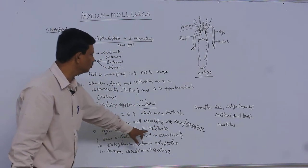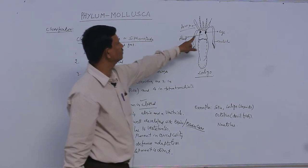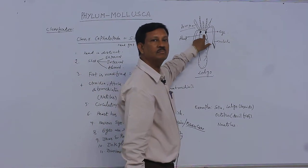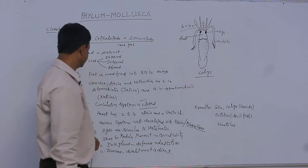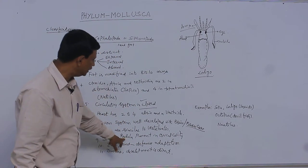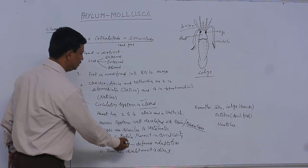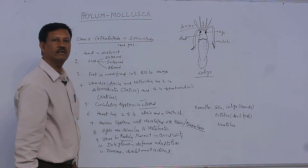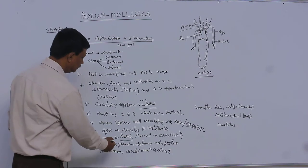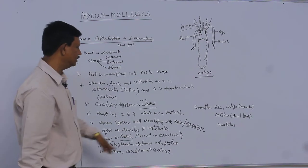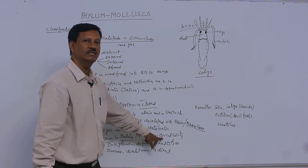Eyes are similar to vertebrates. Large eyes are present, such types of eyes that are present in vertebrates. And jaws and radula are present in the buccal cavity. Generally, radula is present in the buccal cavity, but not only radula—jaws are also present in the buccal cavity. They are useful for digestion.